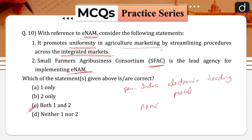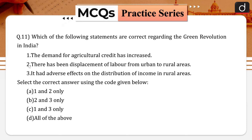Small Farmers Agribusiness Consortium is the lead agency for implementing E-NAM under the aegis of the Ministry of Agriculture and Farmers Welfare. Therefore, the second statement also becomes correct. Both are correct, so option C is the correct answer.